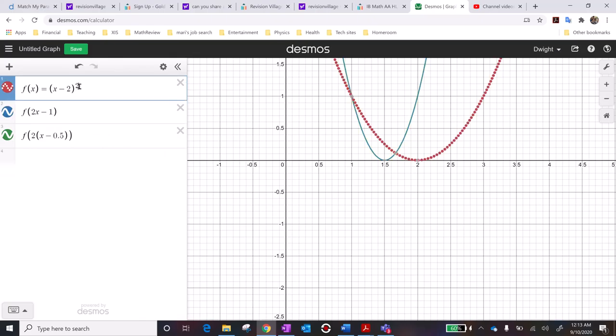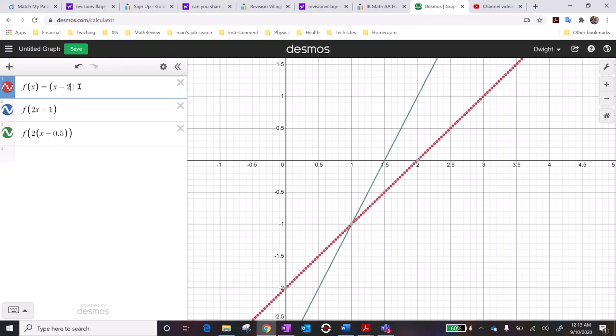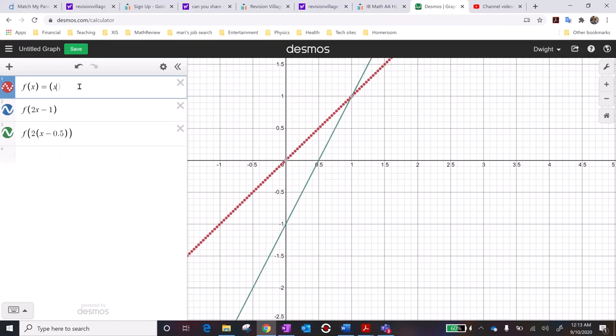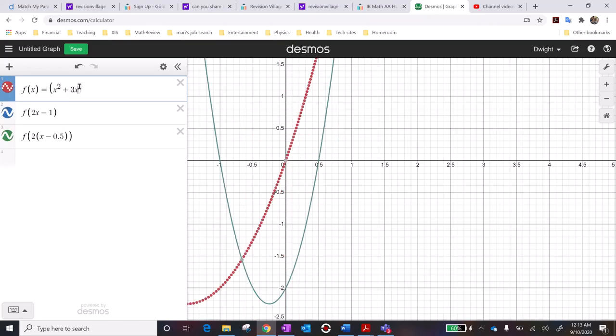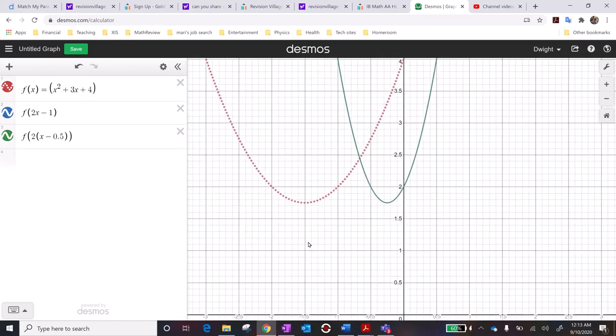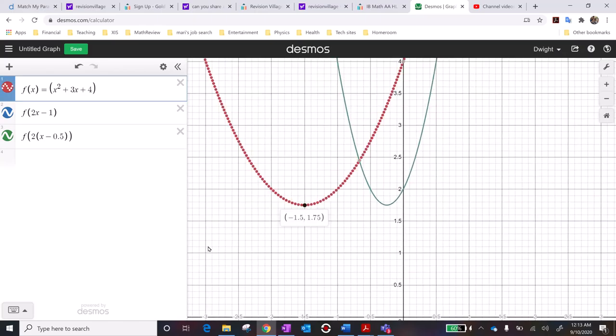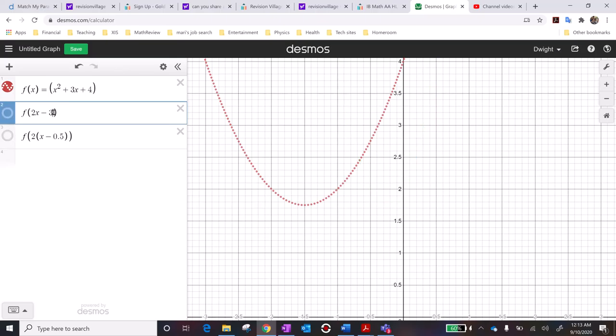But, you know, I encourage you just to mess around with different functions. Just write some different functions in here. You can write whatever you want. So there's a function there. Look at where the vertex is and then do some different things. Like, you know, make a prediction, like, think about for yourself, okay, where is this graph going to be?